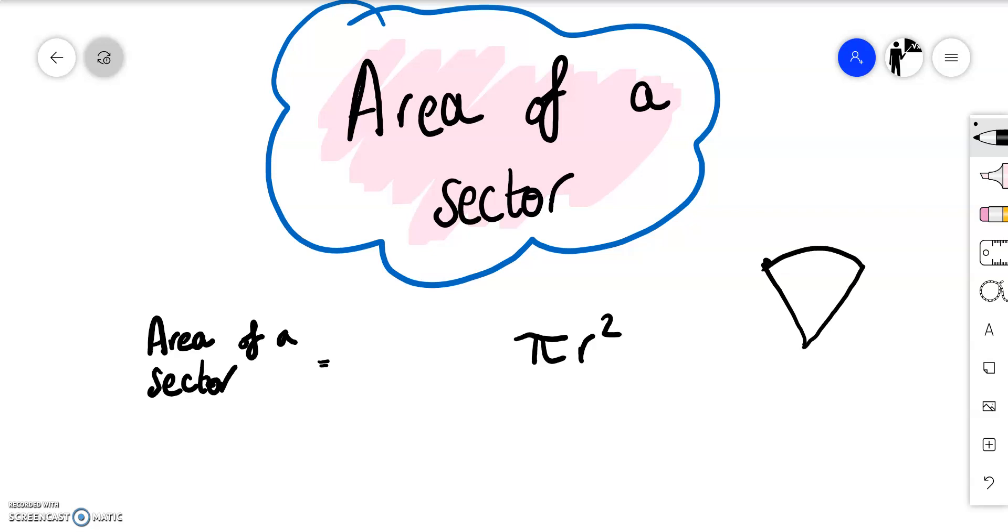For example, something that looks like that. So what we need to do is we just need to think about what is the fraction of the circle and we do that by looking at the angle over the whole and in this case around the point it would be 360.